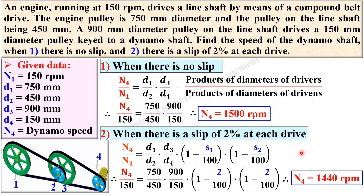When there is no slip, the speed of the driven shaft is 1500 rpm, but when there is slip the speed is reduced — you can see the speed of the driven shaft is less due to slip, giving 1440 rpm. Thanks for watching this video. If you have any questions, write in the comment box.